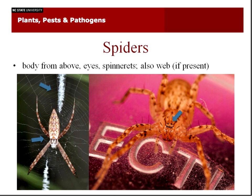For spiders, take a picture of the body from above, the web — which can be important — and especially the eye arrangement, and if possible, the underbelly of the abdomen where the spinnerets are. Those are all really good diagnostic characters for spiders. Eyes are probably the most important, because they range differently in different spiders.